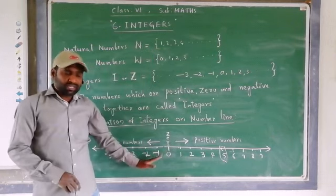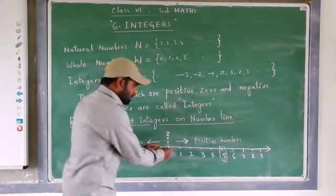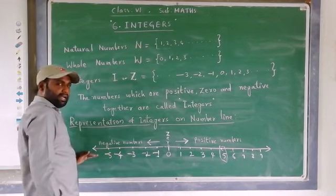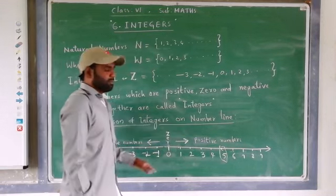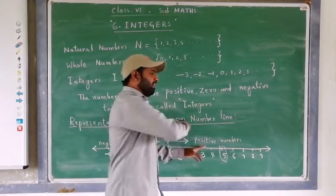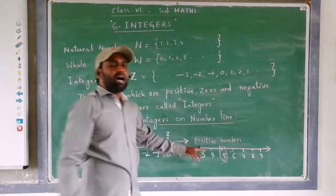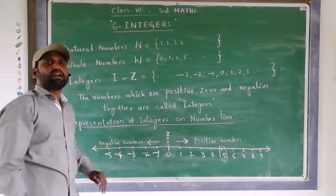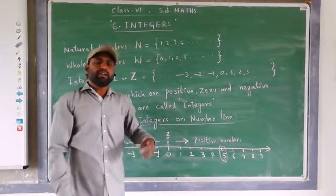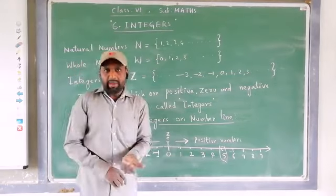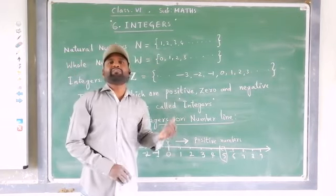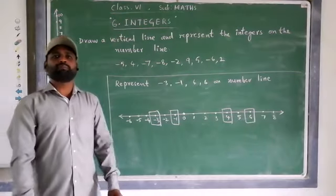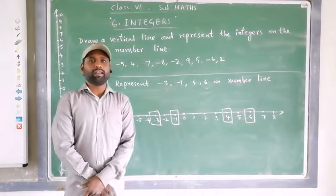When you represent numbers on the number line, from 0 the right-hand side are all positives and the left-hand side are all negatives. From any point on the number line, if you move to the right-hand side, the value of the number will increase; if you move to the left-hand side, the value of the number will decrease.